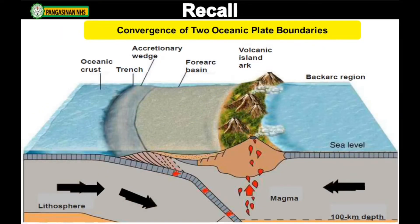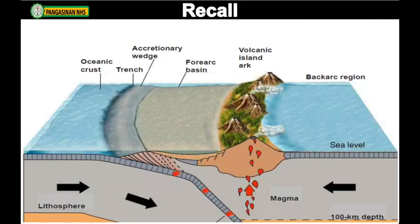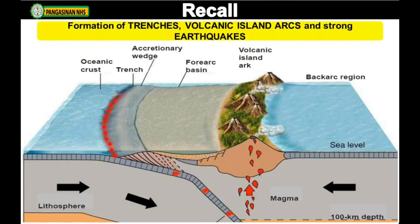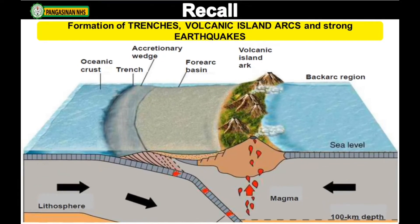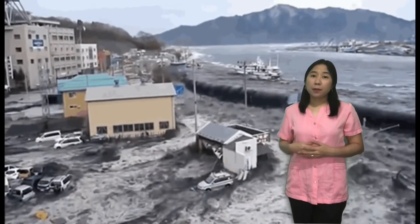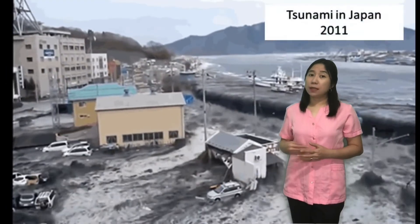In the convergence of oceanic to oceanic crustal plates, it leads to the formation of trenches, volcanic island arcs, and strong earthquakes that can generate tsunamis — like what happened in Japan in 2011.